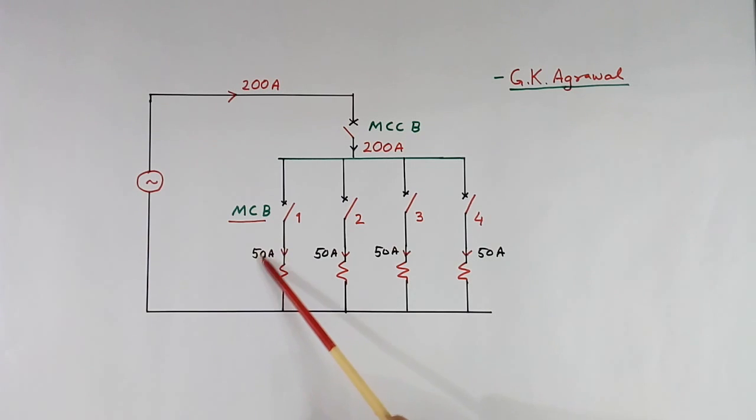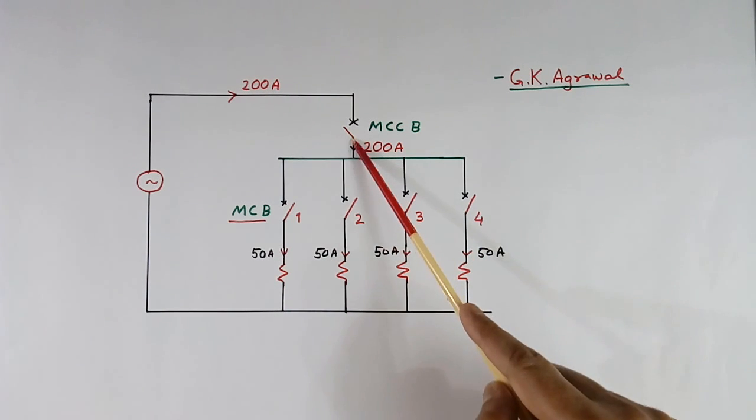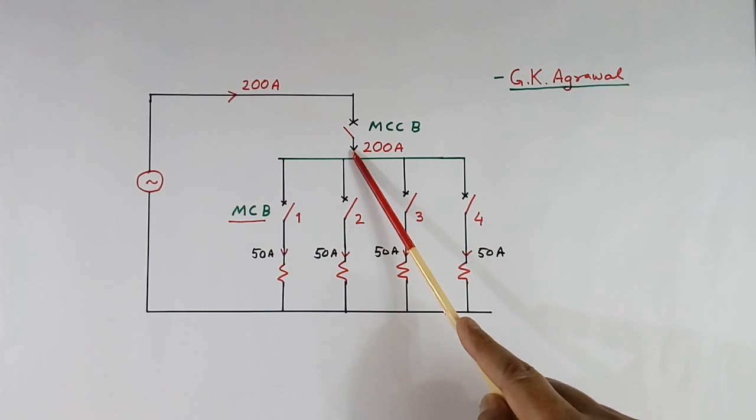Let us assume each load is having 50 A current. So total current will be 50 plus 50 plus 50 plus 50, 200 amperes, will flow here.